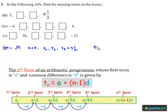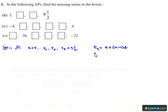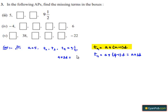We know that in AP, Tn (the nth term) is equal to a plus (n minus 1) times d. Therefore T4 = a + 3d. We can write a + 3d equals 9½, which we convert to the improper fraction 19/2. So we have 5 + 3d = 19/2.